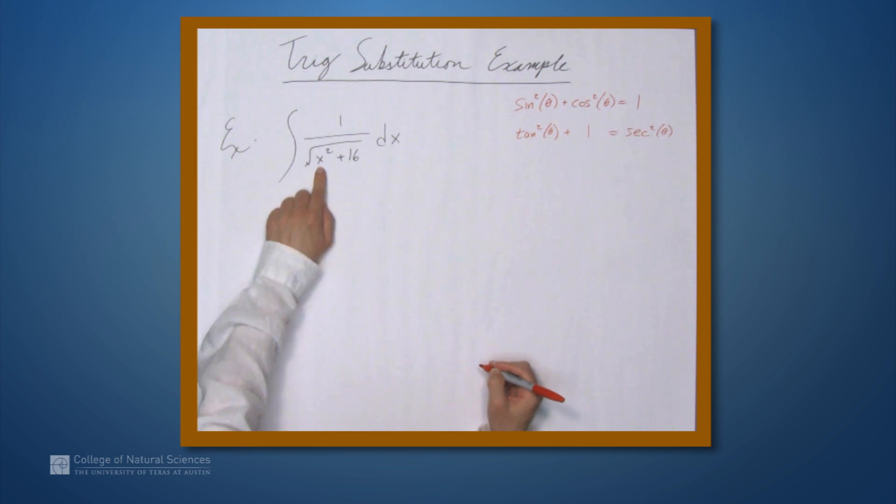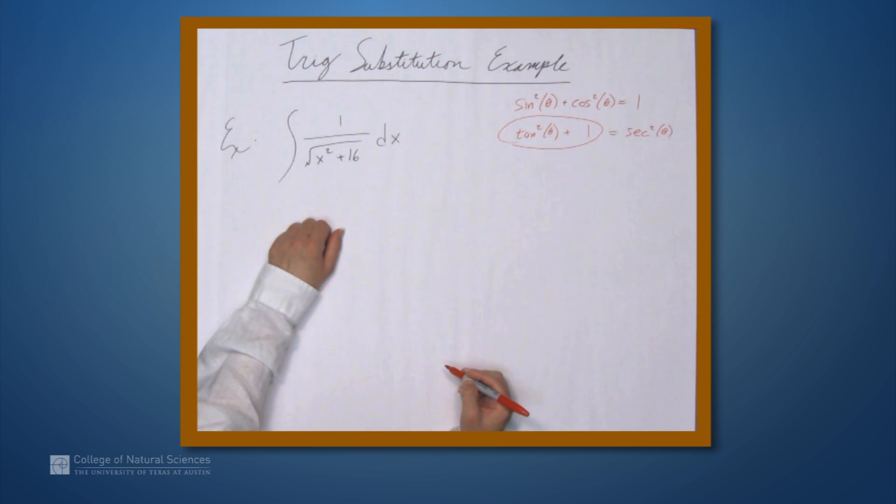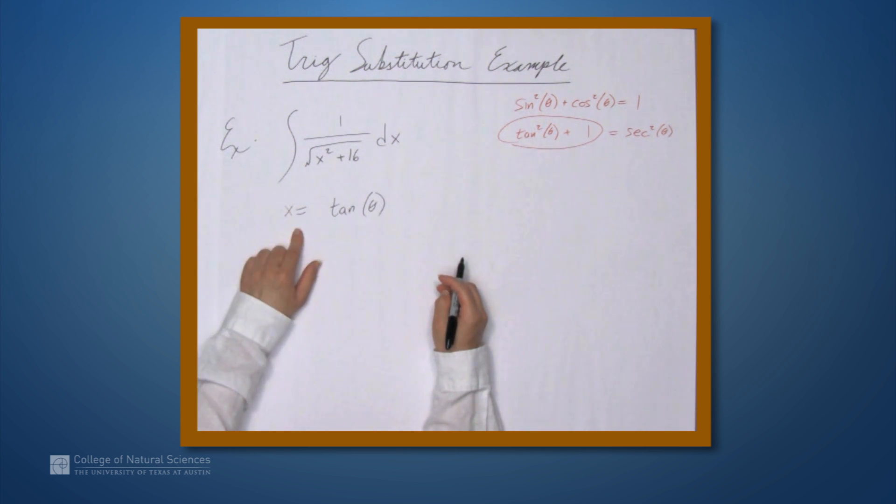So I see a variable squared plus 16. I want to get this expression involved. Now, the basic substitution that we'll make then is that x equals tangent of theta. And so this is what I meant by saying that our substitution might at first look as if we're making things more complicated. Because tangent theta looks more complicated than x.